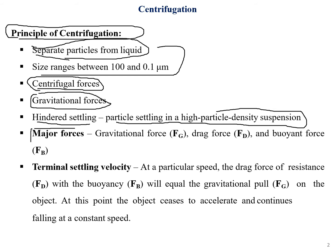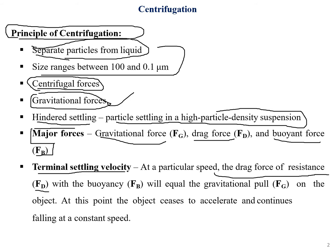The major forces involved in centrifugation are: the gravitational force (fg), the drag force (fd), and the buoyant force (fb). We'll derive an equation correlating these three forces. This also brings us to terminal settling velocity — at a particular speed, the drag force fd and buoyant force fb together become equivalent to the gravitational force fg on the object.